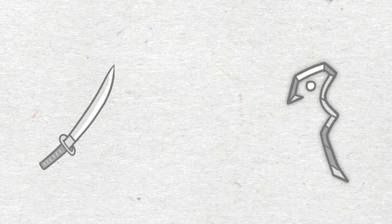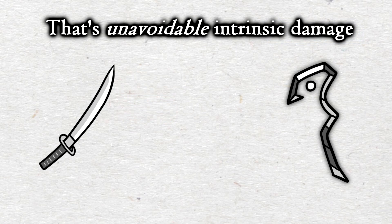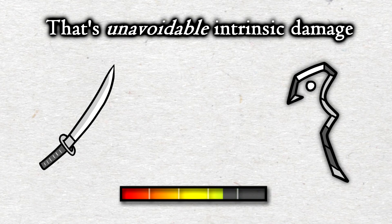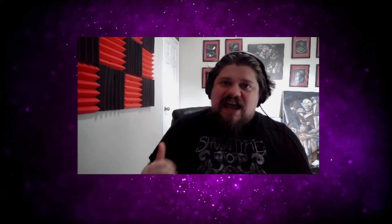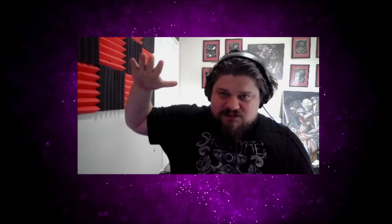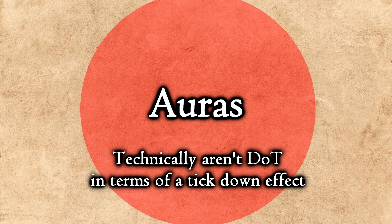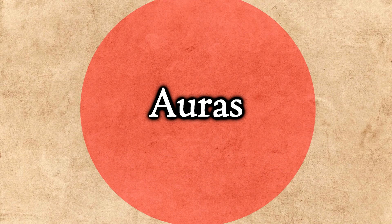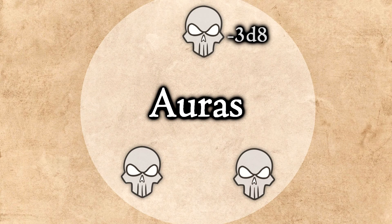DLT and auras fall under intrinsic damage. For example, a spell like Witch Bolt deals a d12 at the start of your turn — that's unavoidable intrinsic damage, which permanently scales down the HP threshold for as long as it lasts. Stackable damage over time is very dangerous because it keeps ticking health down and isn't really avoidable. Auras work similarly — they represent an AOE version of a singular DLT, and spells like Spirit Guardians are literally both.